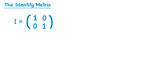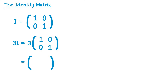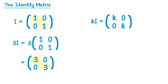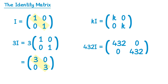So capital I is the identity matrix. What would three I be? This would just be three times the identity matrix. To do this you multiply all elements by three: three times one is three, three times zero is zero, three times zero is zero, three times one is three. For the identity matrix we have ones on the diagonal and zeros for the rest. With three I we have threes on the diagonal and zeros for the rest. In general, k times I would have k's on the diagonal and zeros for the rest. So you can immediately write down any such matrix — for example, 432 times I would have 432s on the diagonal and zeros for the rest.